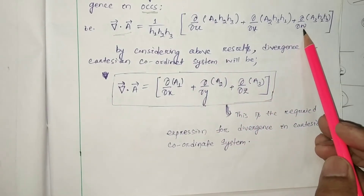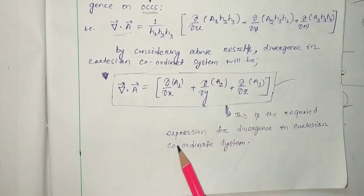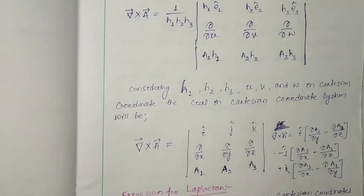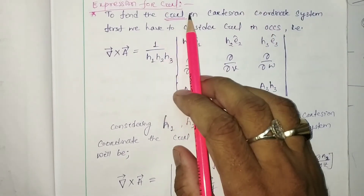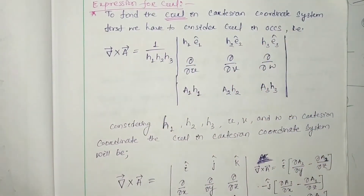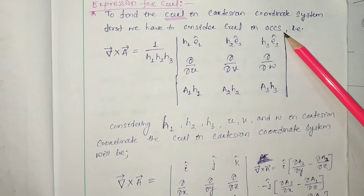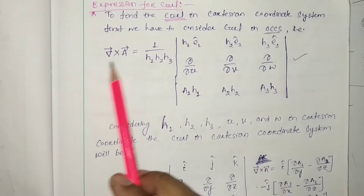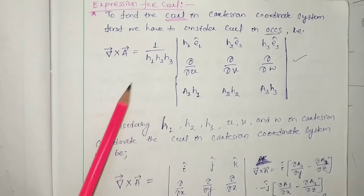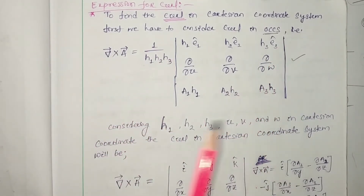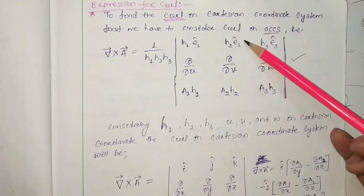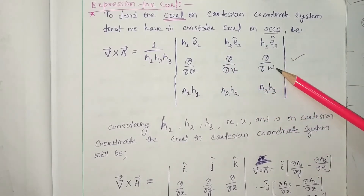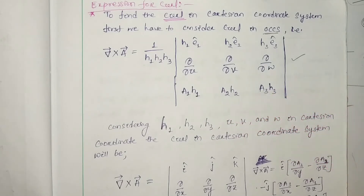Now we go for the expression for curl in Cartesian coordinate system. To find curl, we first consider curl in OCCS. The curl of a vector field in OCCS is: (1/h1 h2 h3) times the determinant of the matrix with first row [h1 e1 cap, h2 e2 cap, h3 e3 cap], second row [del/del u, del/del v, del/del w], and third row [a1 h1, a2 h2, a3 h3].